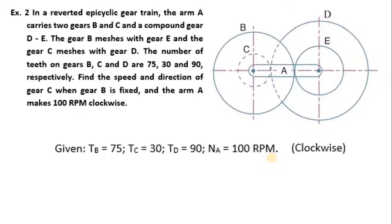Find the speed and direction of gear C when gear B is fixed and then the arm A makes 100 RPM clockwise. So note down the given: TB is 75, TC is 30, TD is 90 and NA is 100 RPM in clockwise direction.